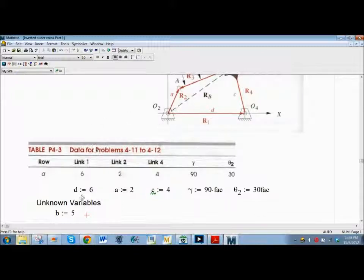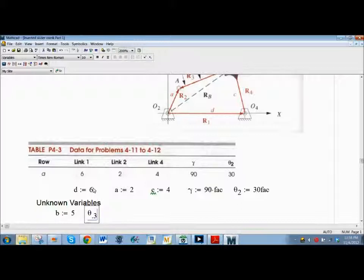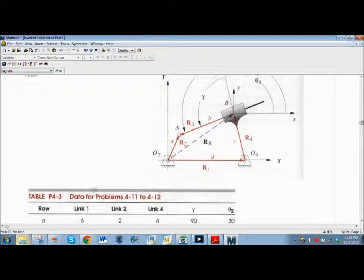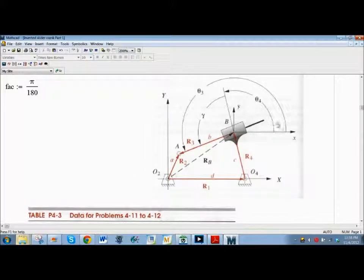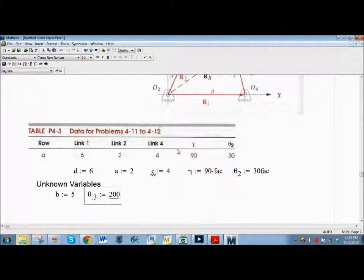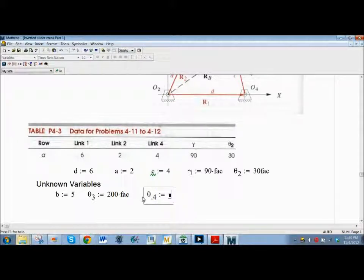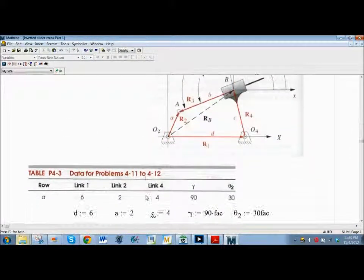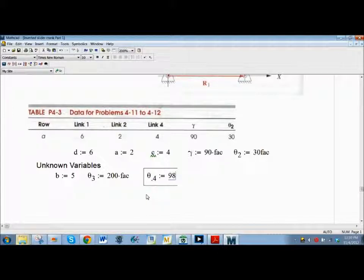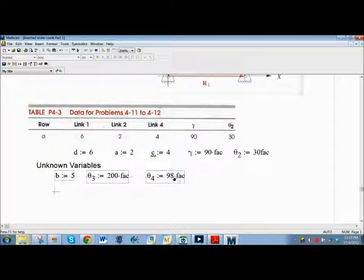So Q alt control G period 3, assignment variable is, looking at the picture, it's something greater than 180, so we'll just say 200 times factor. And Q alt control G period 4 is something, I don't know, 98. That's a good guess, times factor. All right.